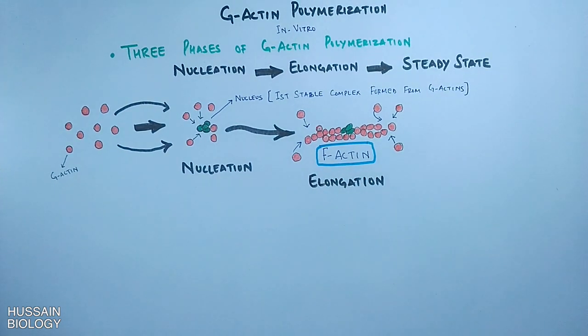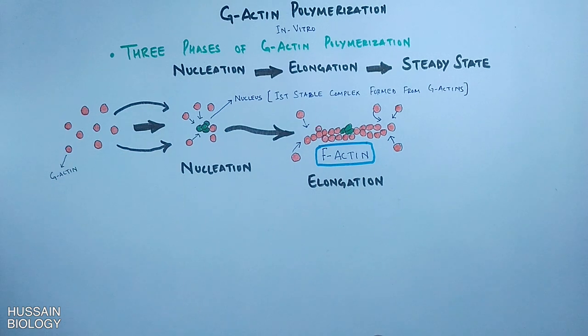It must be noted here that actin filaments grow faster at plus ends than at minus ends. Almost the rate of addition of ATP G-actin is nearly 10 times faster at the plus end than at the minus end.